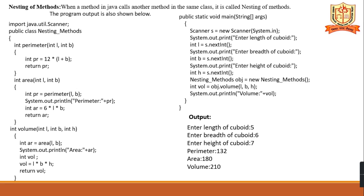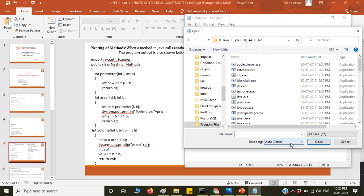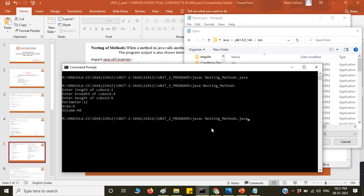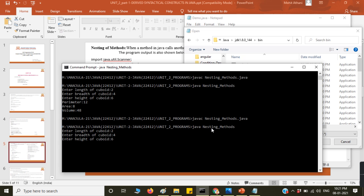One more thing: here we are using the Scanner class. The Scanner class is used when the program wants to take input from the user. The Scanner class is present in the util package, which is present in Java. Just as in C and C++ you use header files, here you use the import statement. Import means you are calling the Scanner class. We will run the program and see the output — taking length, breadth, and height values from the user using the Scanner class. The volume is printed automatically by calling only the volume method.